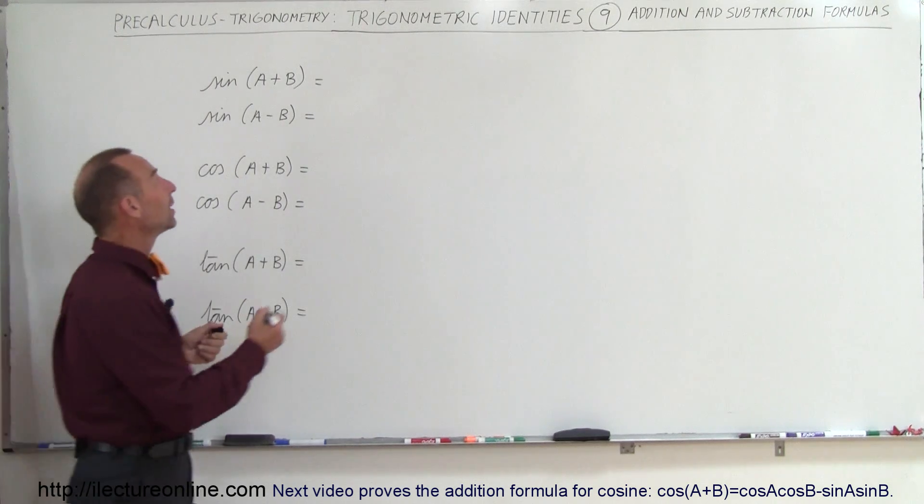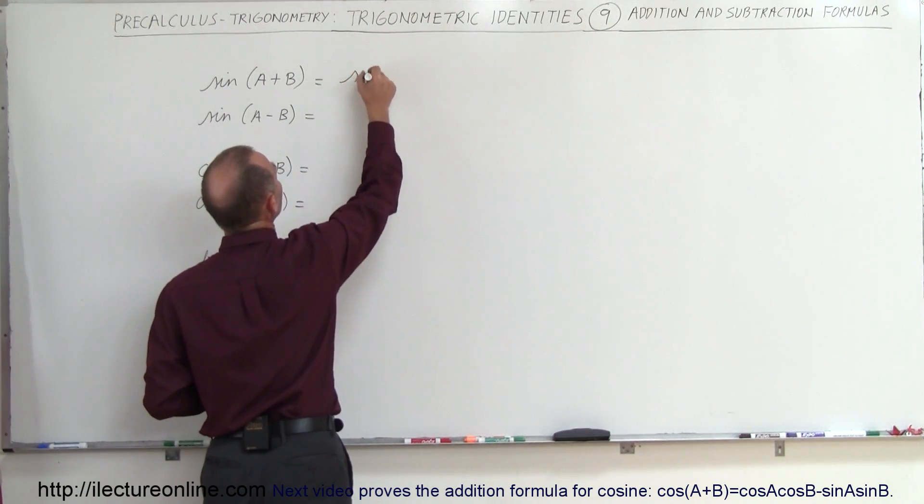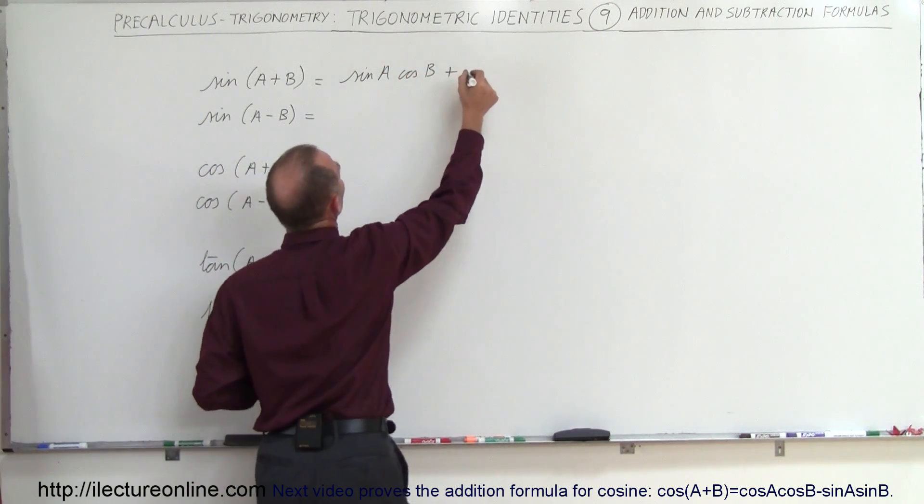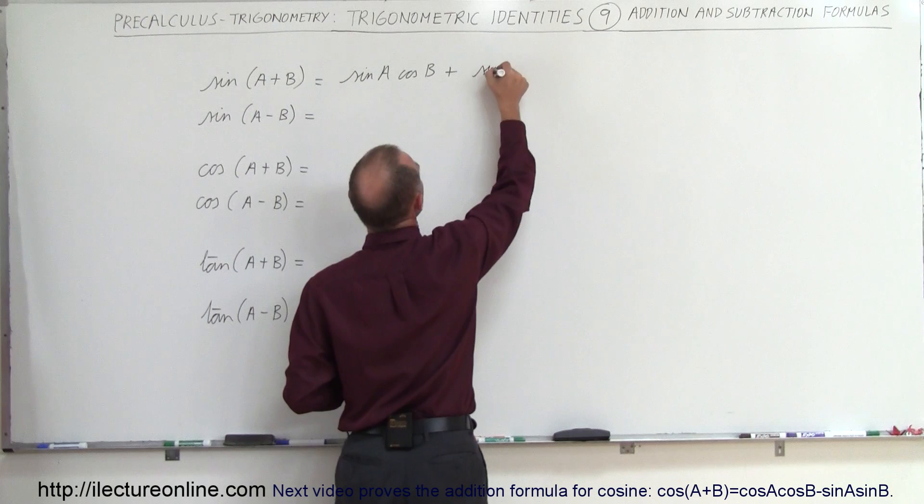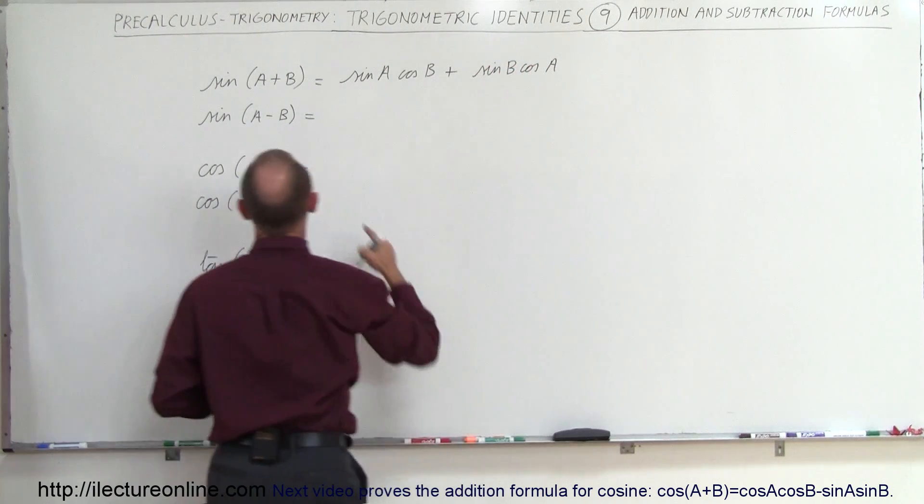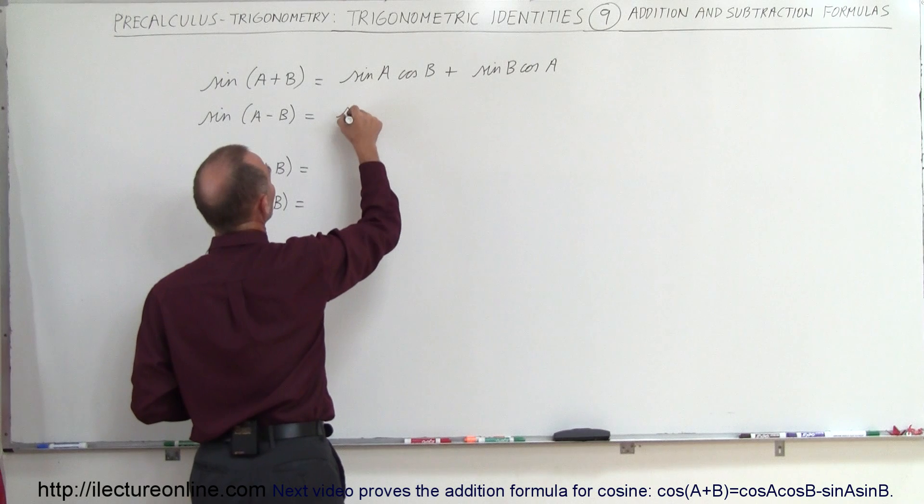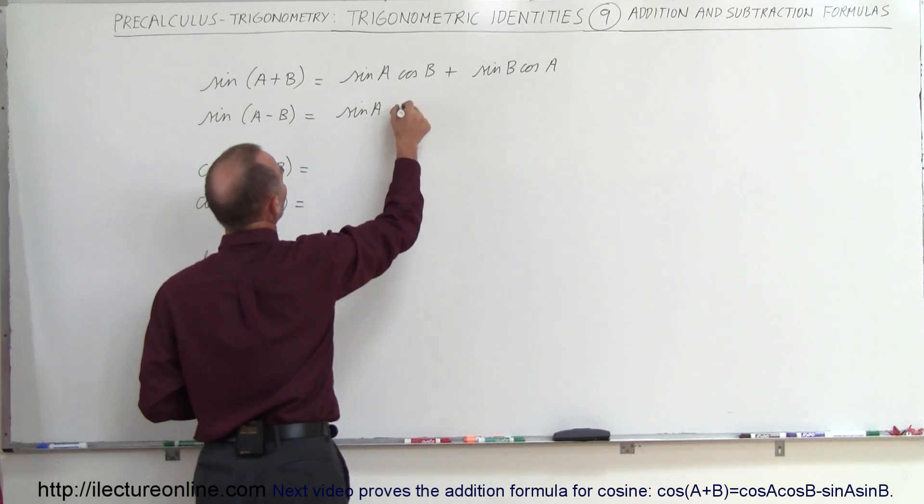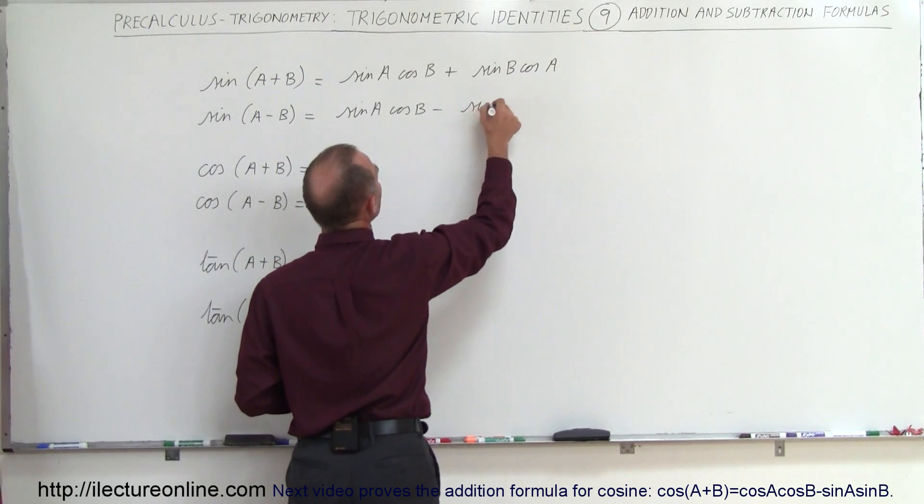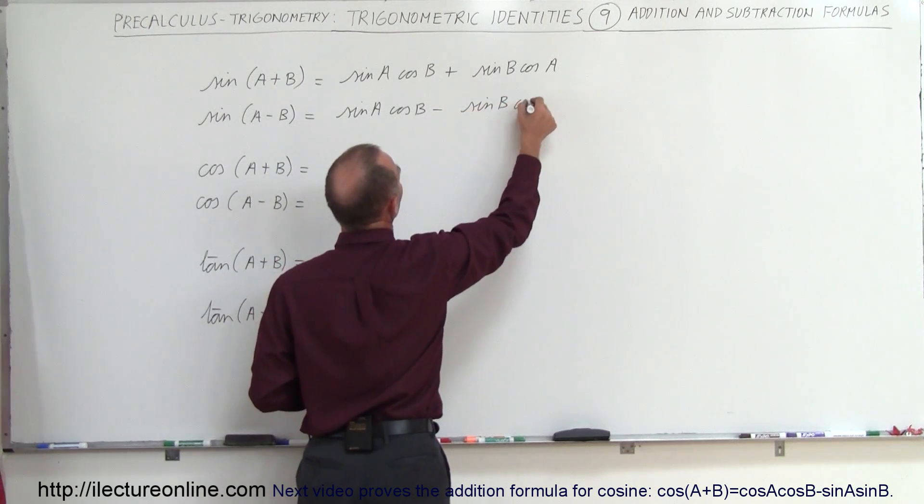Starting with sine of A plus B, this is equal to sine A times cosine B plus sine B times cosine A. The sine of A minus B is equal to sine A times cosine B minus sine B times cosine A.